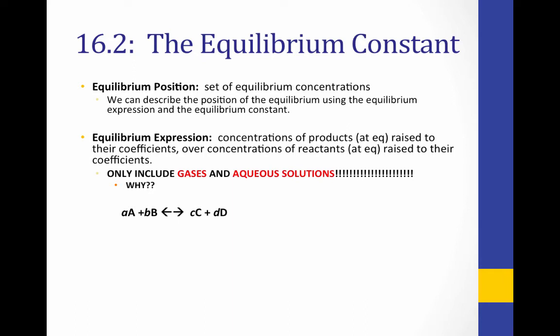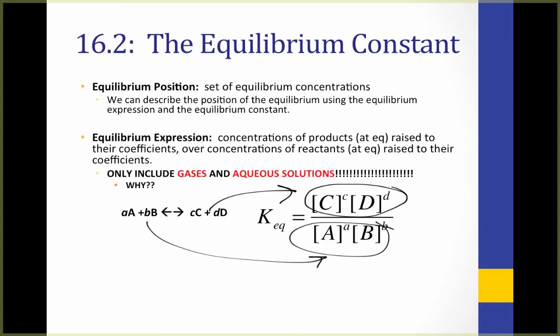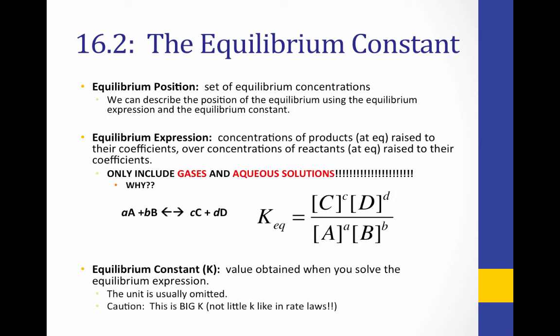Take this example. The small letters a, b, c, and d represent coefficients, and the capital letters A, B, C, and D represent reactants and products. The equilibrium expression is: KEQ equals the concentration of C raised to its coefficient times the concentration of D raised to its coefficient, divided by the concentration of A raised to its coefficient times the concentration of B raised to its coefficient. That is products over reactants, each raised to their coefficients. Brackets refer to concentration. The equilibrium constant K is the value obtained when you solve the equilibrium expression. It is generally unitless. Note: this is a capital K, different from the small k in rate laws — equilibrium uses capital K, rate laws use small k.